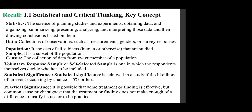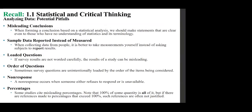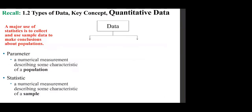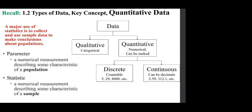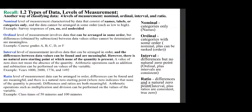Statistical significance versus practical significance. Potential pitfalls: misleading conclusions, sample data reported instead of measured, loaded questions, order of questions, non-response, misleading percentages. Various types of data: parameter versus statistic; qualitative versus quantitative; quantitative can be discrete (countable) or continuous (takes place over an interval). Various levels of measurement were discussed: nominal, ordinal, interval, and ratio.